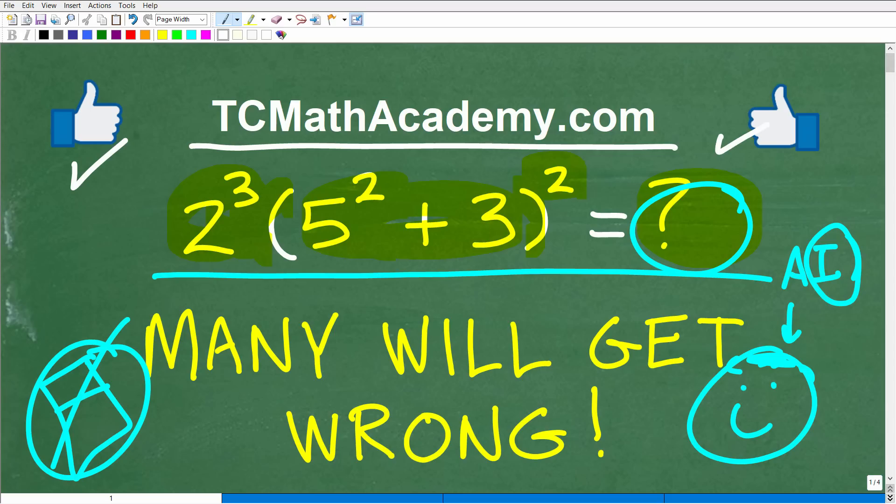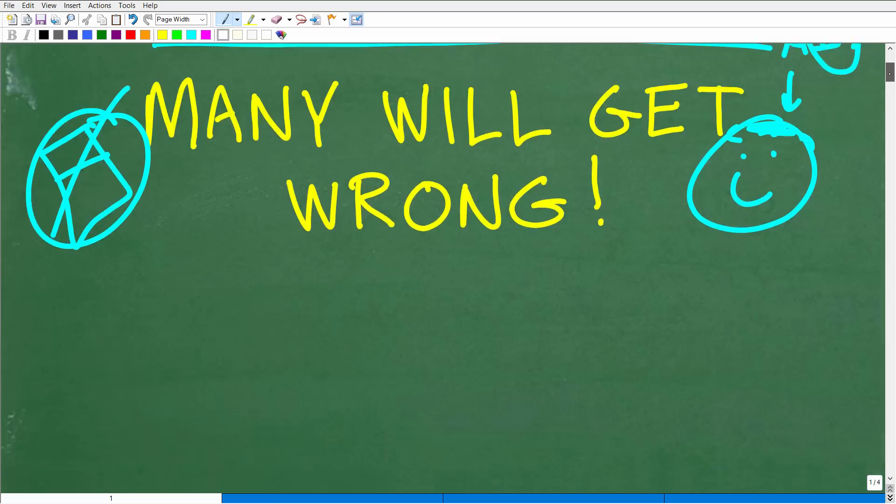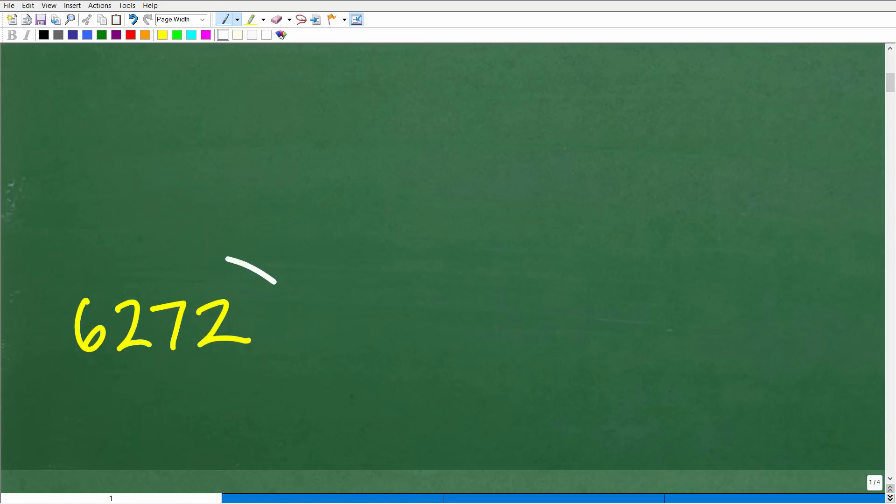Alright, let's go ahead and take a look at the answers. So again, 2 cubed times parenthesis 5 squared plus 3 and parenthesis squared. What is this all equal to? Well, if you did this right, you would have come up with this answer right here: 6, 2, 7, 2.